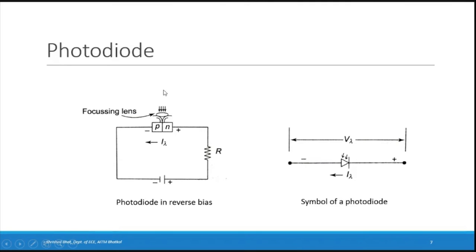In a photo diode circuit, the p-side is connected to the negative of the battery and the n-side to the positive — reverse bias. The reverse current due to light is called i-lambda. A limiting resistance is used to prevent the current from exceeding a certain level. The symbol shows a diode with arrows pointing inward, indicating light falling on it. The voltage is indicated as V-lambda.